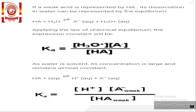If a weak acid is represented by the general symbol HA, when it dissociates in water the equilibrium is: HA + H₂O ⇌ A⁻ + H₃O⁺. According to the law of equilibrium, the ionization constant Ka equals the concentration of hydronium ion multiplied by A⁻ ion, divided by the concentration of HA. The concentration of water is taken as constant because water is present in large quantity. This equation applies only for weak acids and weak bases.